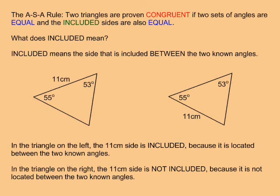The ASA rule states that two triangles are proven congruent if two sets of angles are equal and the included sides are also equal. But what does included mean? Included means that the side is included between the two known angles. In the triangle on the left, the 11cm side is included between the 55 degree and 53 degree angles. But in the triangle on the right, the 11cm side is not included.